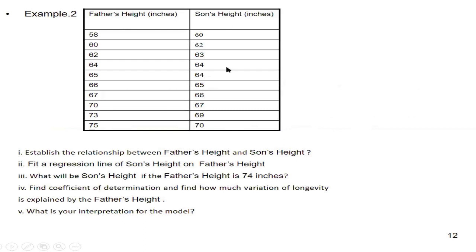There is one more example I am putting for you: father's height and son's height. From the father's height, you have to fit a regression model for the son's height. But as I told you, before fitting a regression model, first of all find the relationship between the two variables — father's height and son's height. I want to mention that this data is from the original Galton data — who developed the regression model — and I took a part of it for your practice. Then fit a regression line of son's height on father's height, because son's height depends on father's height.